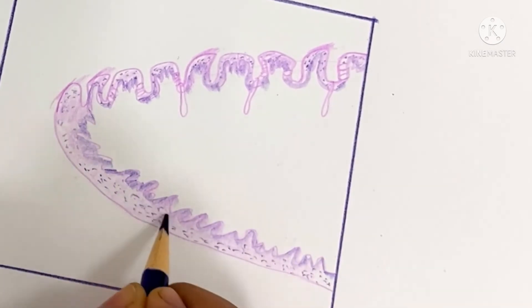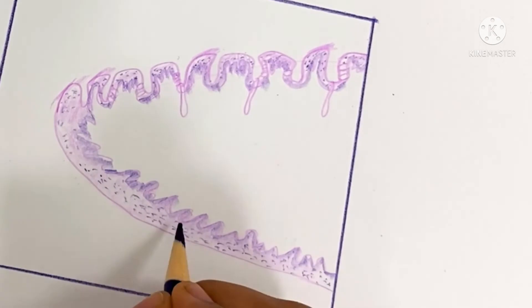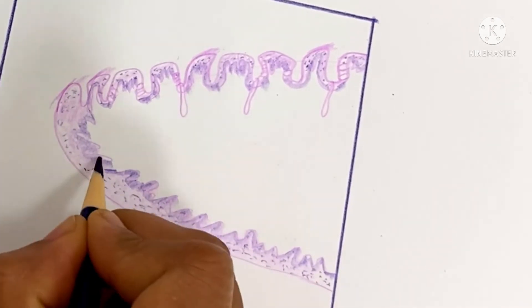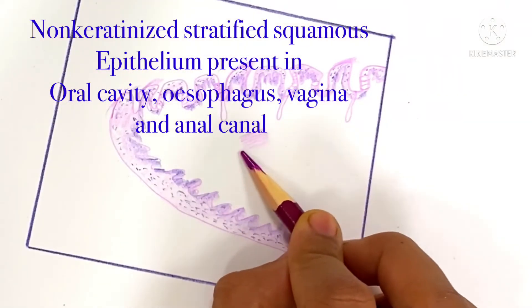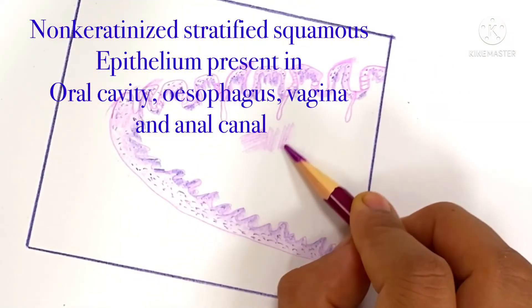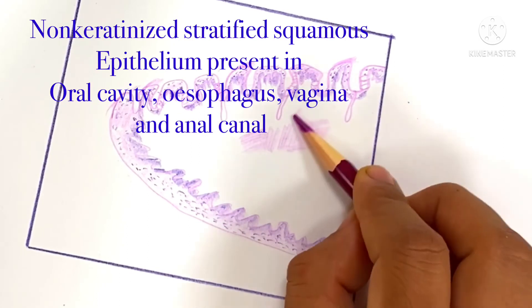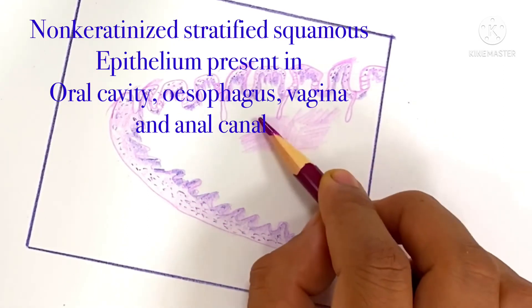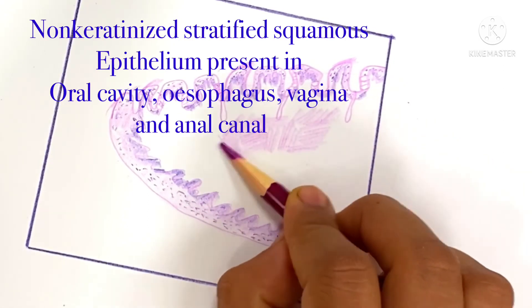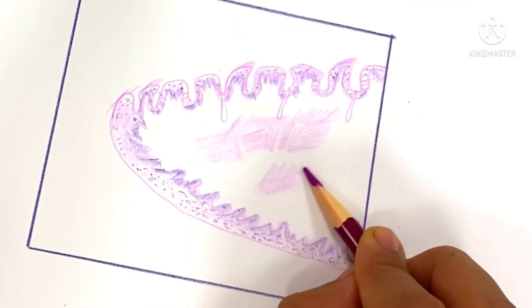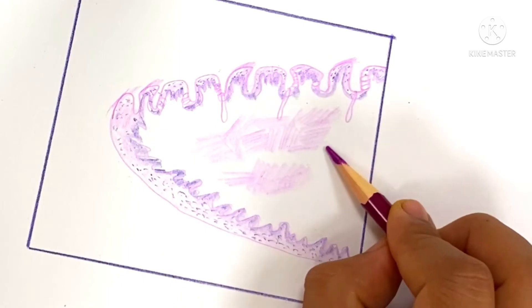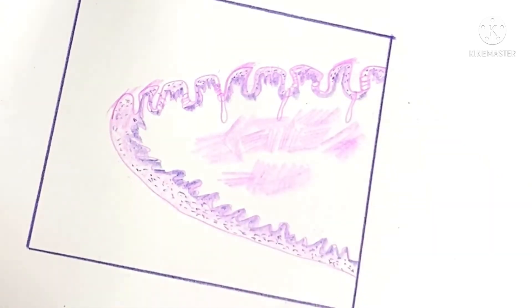The epithelium of the tongue is stratified squamous epithelium. The dorsal surface presents irregular rough elevations - papillae. The central core of the tongue is formed by muscle arranged in various directions.